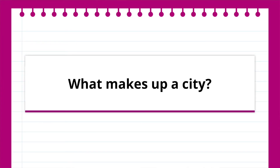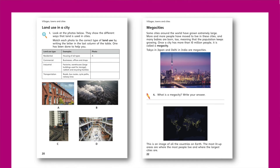Lesson four asks, what makes up a city? Pupils will consider land use within cities, and how different areas may be allocated as green spaces, or for residential blocks, or for commercial buildings. The emergence of mega cities, usually taken to mean cities with more than 10 million people, will also be explored.